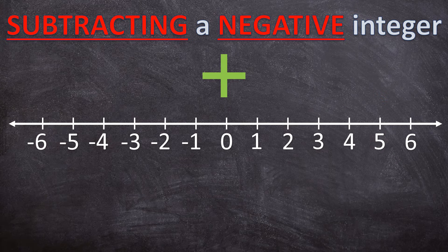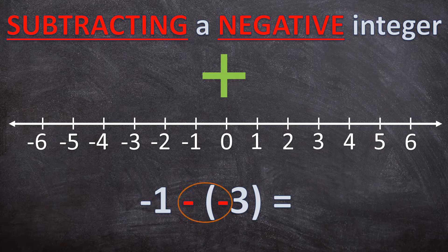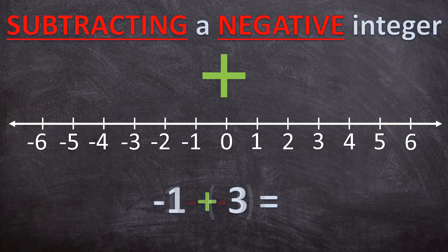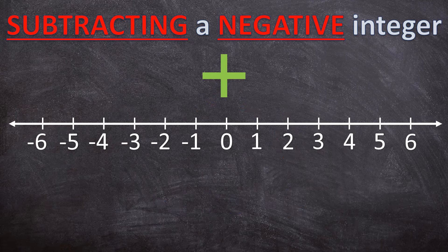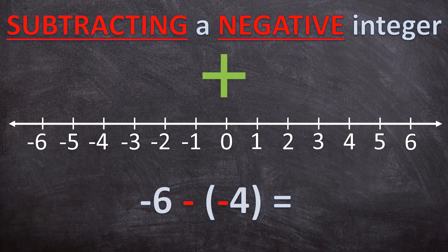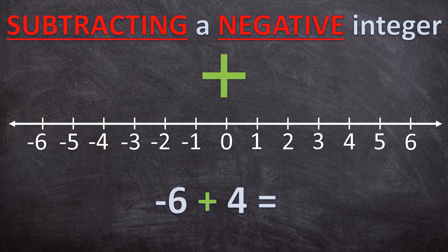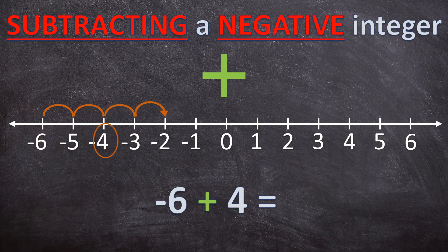Next example: negative 1 minus negative 3 can be written as negative 1 plus 3. Let's look on the number line — negative 1 plus 3 is equal to 2. And the last example: negative 6 minus negative 4 can be written as negative 6 plus 4, which is equal to negative 2.